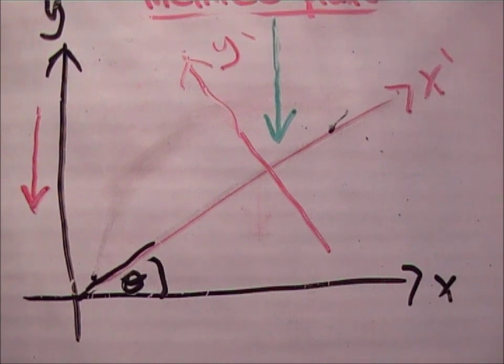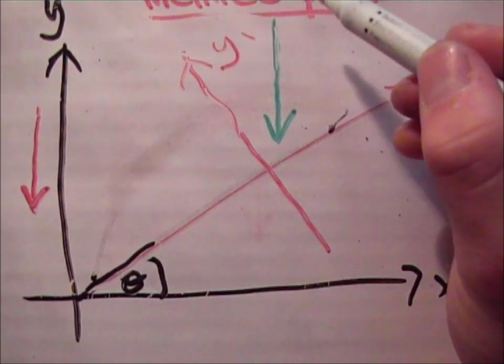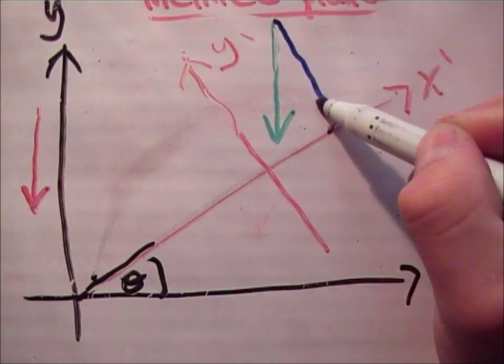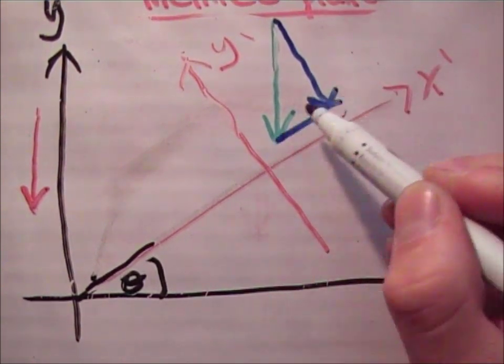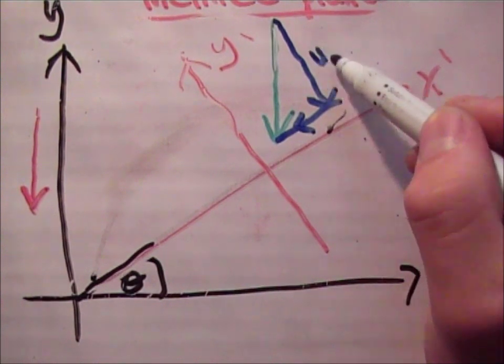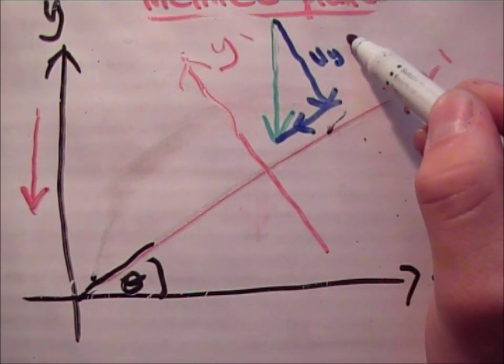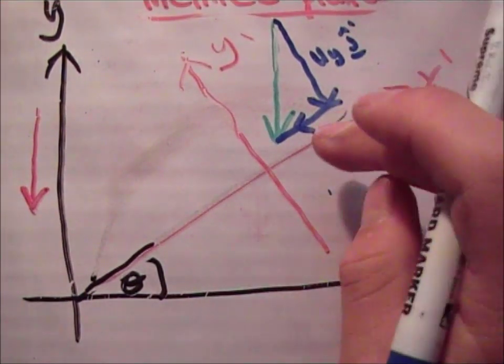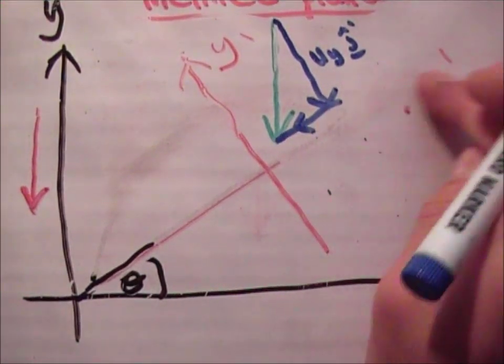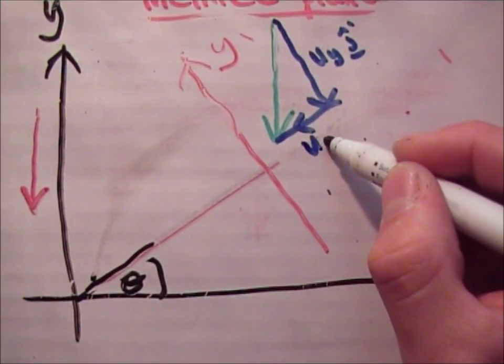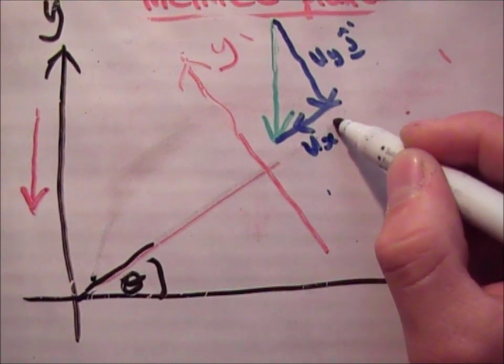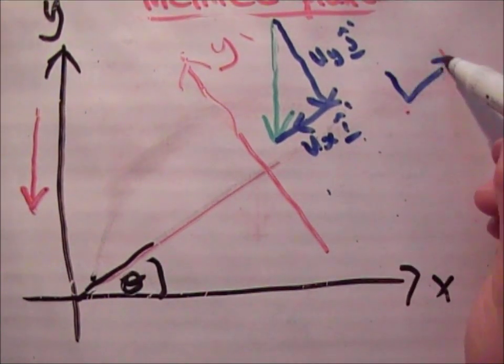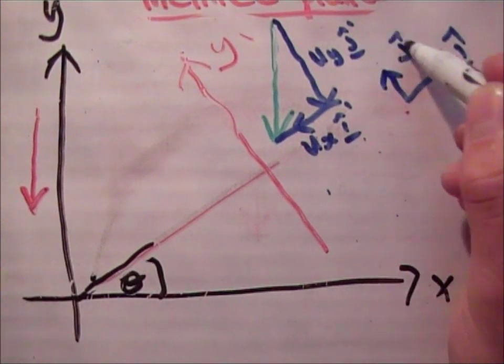So what you do, you get the component unit vectors. And they are the two vectors which when added together will give you your resultant vector of gravity. So it's u sub y j prime hat, and this one here would be u sub x i hat prime. What I'm saying here is that this unit vector here is i hat prime, this unit vector here is j hat prime.